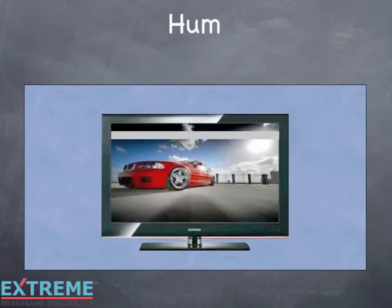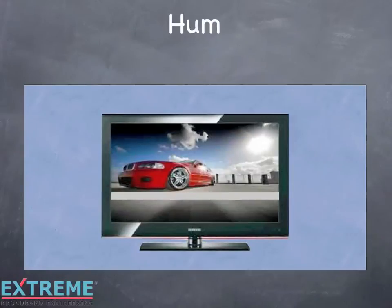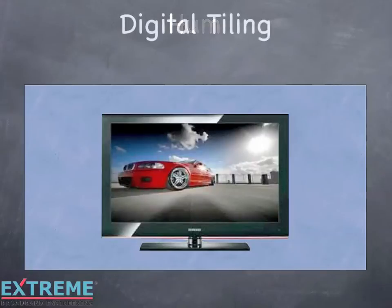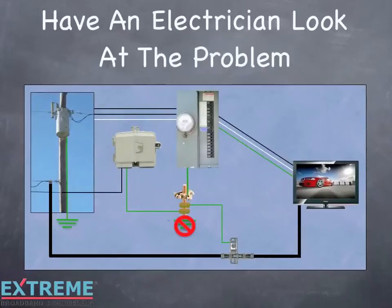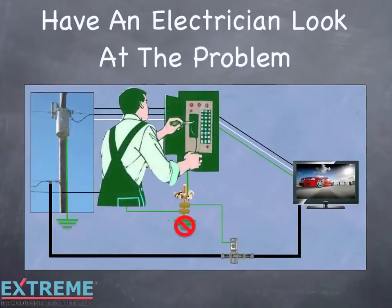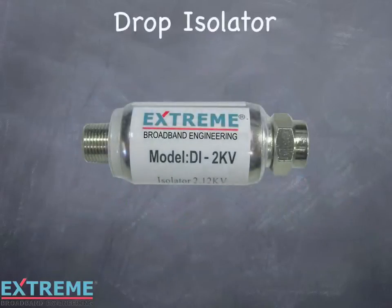Some of the impairments that this could cause for cable TV services are hum, where visible lines roll up through the picture on analog channels, or digital tiling and high BER on data services. When a bad common ground is suspected, it's always best to have this looked at by the power utility or an electrician to have them repair the problem. If they're unable to correct this due to soil conditions, or as an interim fix, a drop isolator can be used.